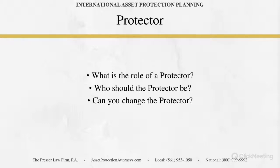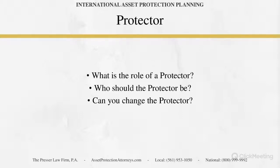A properly drafted document will build in a protection that if the protector comes under duress, the protector will be removed and another can be put in place — there might be a provision already naming a successor protector, or a provision allowing the international trustee or LLC manager to choose a new one. There are always safeguards if it's done properly. As the settlor, you get to change the protector, but you can never make yourself the protector, because that would negate a lot of the asset protection.